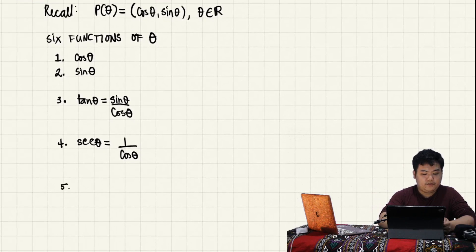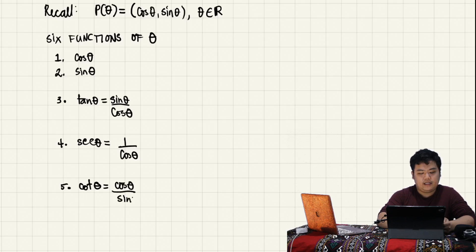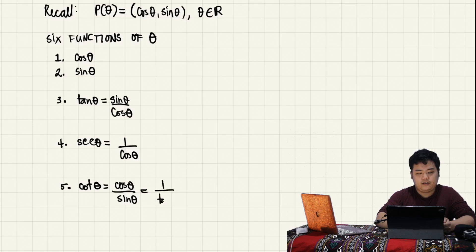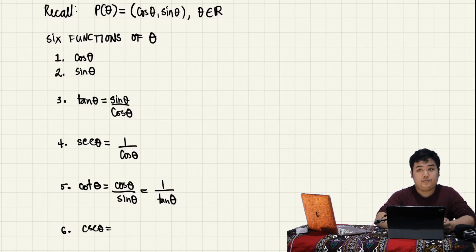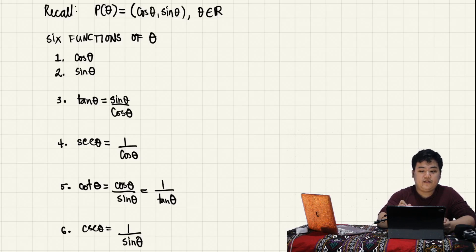The fifth one is cotangent of theta, which is cosine theta over sine theta. You can also think of it as the reciprocal of tangent — so this is also the same as one over tangent of theta. And finally, we have cosecant theta, which is the reciprocal of sine, or one over sine theta.